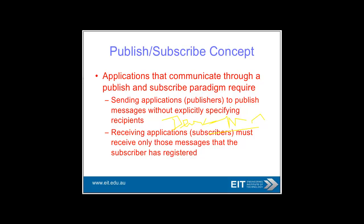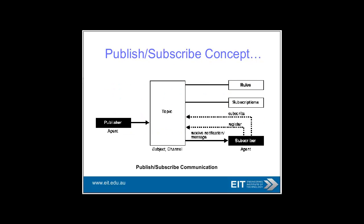The publisher-subscribe model works so that you have various publishers of information — for example, an instrument gathering flow information or current data — that publishes on the bus at a particular defined interval. Then you have subscribers who subscribe to that data and use it in their application. You sometimes hear it called producer-consumer. This is a very important part of the whole substation automation world.